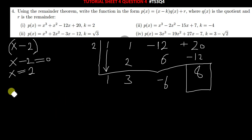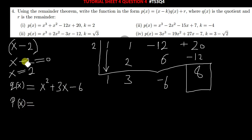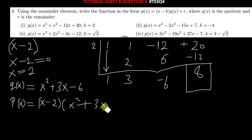And q(x) is the quotient. So our q(x) will now just be equal to: the coefficient of x² is 1, the coefficient of x is 3, and the constant is negative 6. So to write that polynomial p(x) in that format, we have x minus 2 — our divisor — then our q(x) is x² + 3x − 6. And our remainder is simply 8.